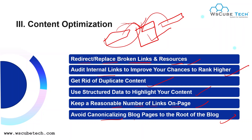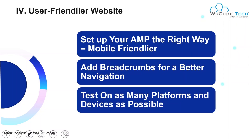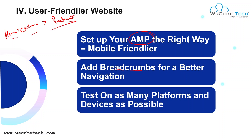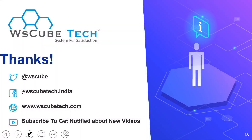The fourth part is building a user-friendly website. We set up AMP correctly to make your website mobile-friendly and add breadcrumbs — the navigation you see on sites like Amazon and Flipkart, going from home page to category page to product page — so visitors can easily navigate your site. We test on as many platforms and devices as possible. This is the checklist of technical SEO. We will cover a lot more in the technical SEO module. Thank you so much for watching this video.